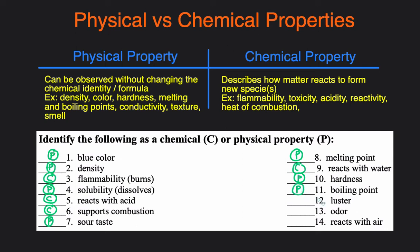Luster. Luster is just how shiny something is. That's something that you can observe without altering the identity of the compound, so that would be, again, a physical property. Odor, just how it smells. That's, again, physical. And then lastly, reacts with air. So that would be chemical.